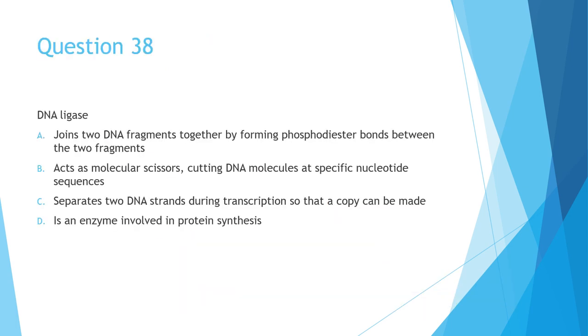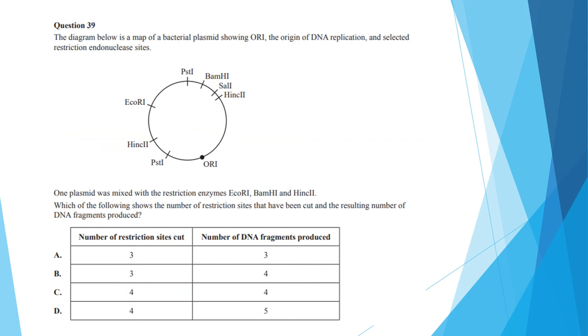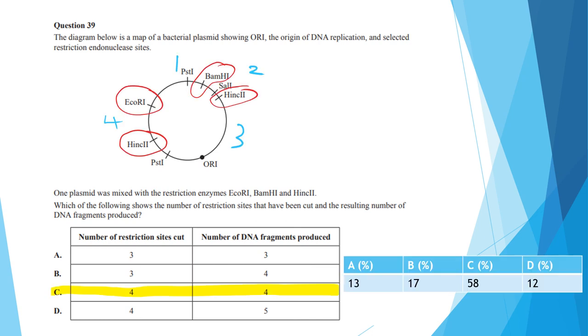Question 38 is another knowledge recall question regarding DNA ligase. And the correct answer here is A, joining two DNA fragments together by forming phosphodiester bonds between the two fragments. Question 39 asks you if you have restriction enzymes EcoR1, BamHI and HincII, how many restriction sites will be cut and how many DNA fragments would be produced? And the answer here is option C. I almost missed that second HincII restriction site. So yes, there are four restriction sites that are cut and you end up with five DNA fragments. In the exam, just scribble over your paper and circle the things and count them out so you know exactly that you got it correct.